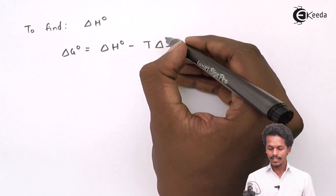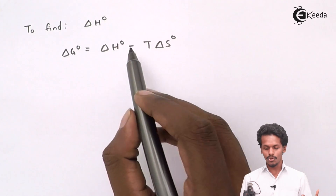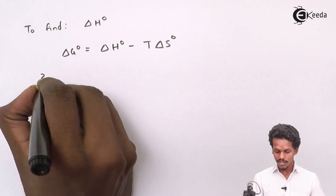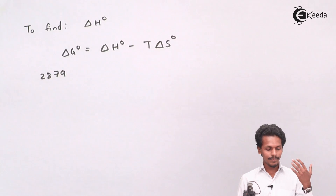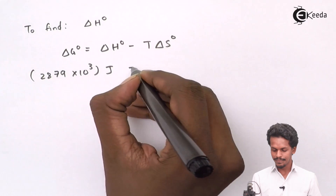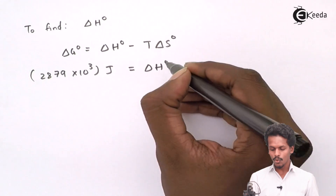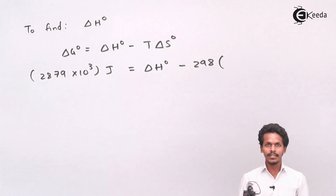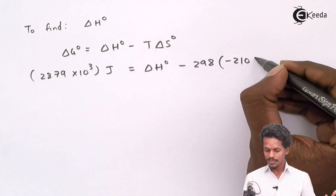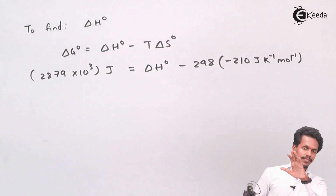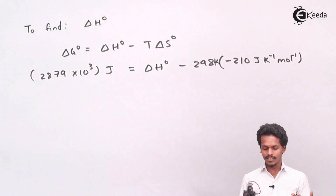Since these are in standard states, G⁰ = delta H⁰ − T·delta S⁰. The standard G⁰ is given as 2879 kJ/mol, which we convert to Joules. Delta H⁰ is unknown, temperature is 298 K, and standard entropy is −210 J/K/mol.